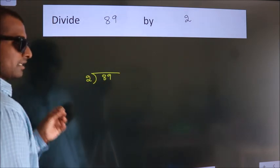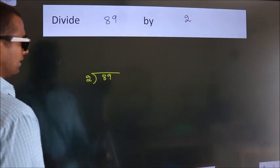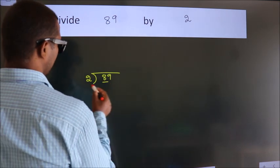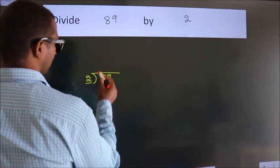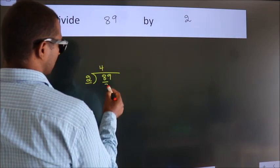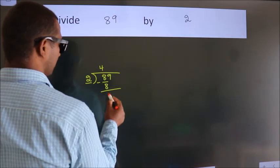This is step 1. Next, here we have 8, here 2. When do we get 8 in the 2 table? 2 times 4 is 8. Now we subtract and get 0.